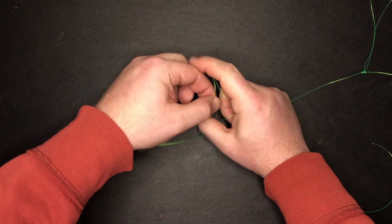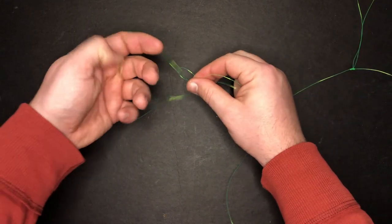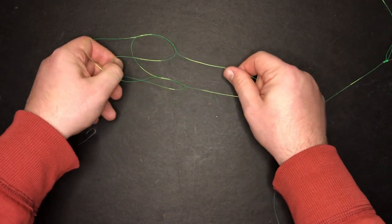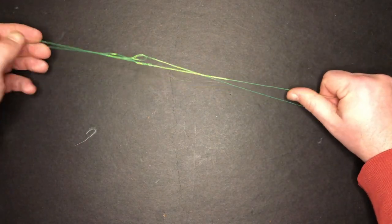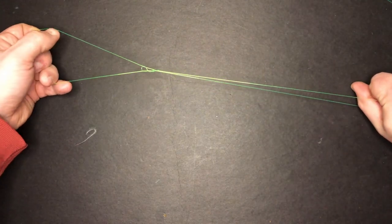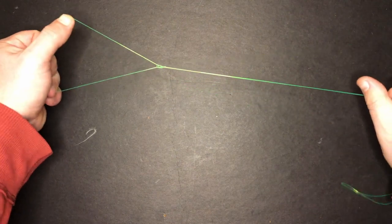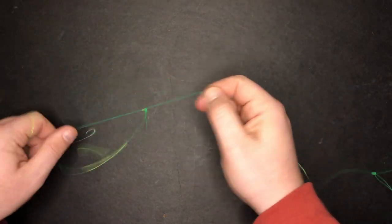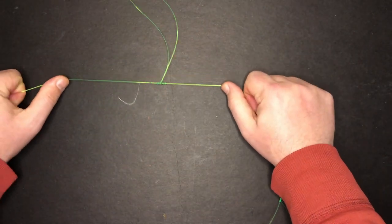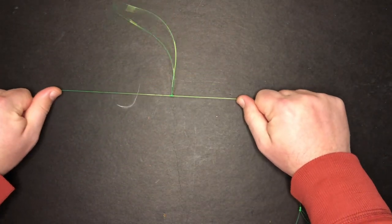My second pointer is when I start to tighten the dropper loop, I hold it against a flat surface. I find when I don't do this, the line starts to jump and can coil up on itself, resulting in a bad knot. So to prevent this, I hold it against the flat surface as I start to tighten it. That prevents everything from jumping around, coiling up on itself, saving me a lot of time and frustration having to tie another knot.